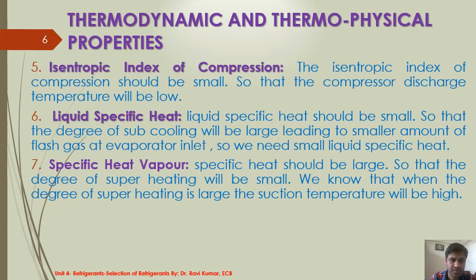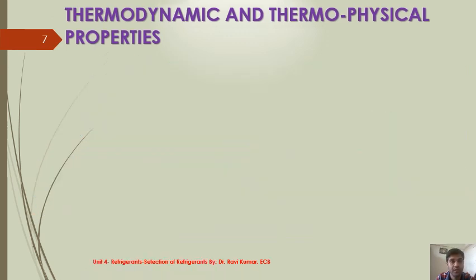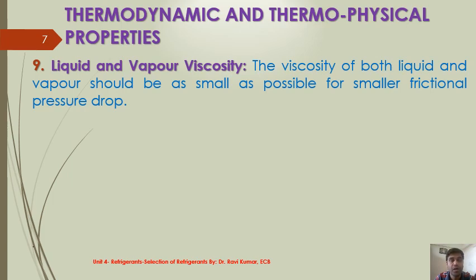When the degree of superheating is large, the suction temperature will be high. Once the suction temperature is high, the density of the refrigerant at the entry to the compressor will be low, meaning a larger compressor is required for a given mass flow rate. So we should have a high value of vapor specific heat, but the liquid specific heat should be low — again, these are contradictory requirements. Both liquid and vapor thermal conductivity should be as high as possible for higher heat transfer coefficients. The viscosity of both liquid and vapor should be as small as possible for smaller frictional pressure drop.